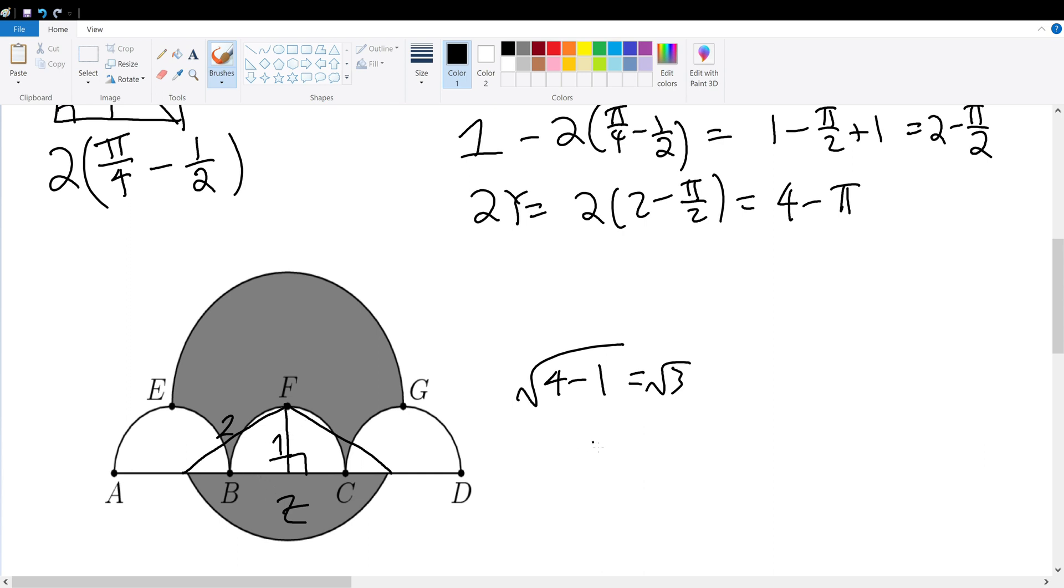But wait a minute, doesn't this look a little bit familiar? If I were to use the sine of this angle right here, let's call that theta, sine of theta would give me root 3 over 2. For special trigonometric angles, theta would be equal to 60 degrees. So if that's 60 degrees, then this is also 60 degrees. Combined angle, if I were to give this a name, let's call this I and J. Angle IFJ would be 2 times 60 degrees, which gives 120 degrees in total.